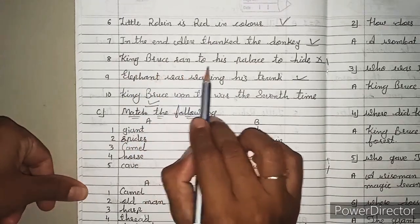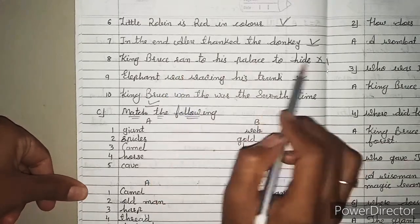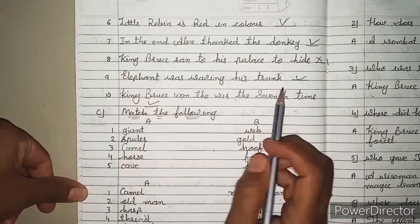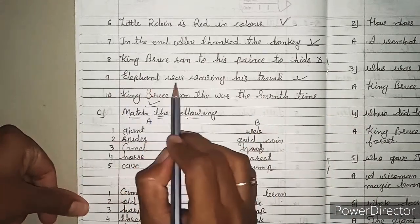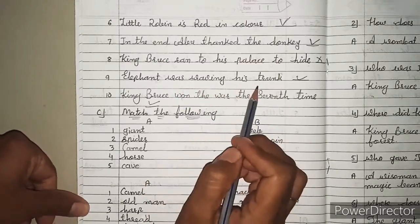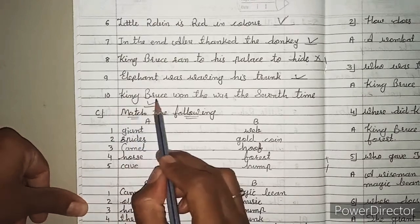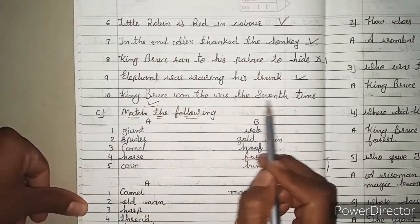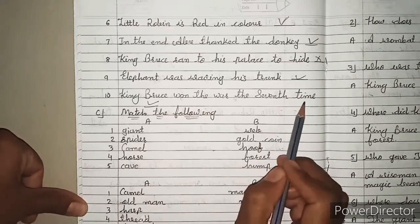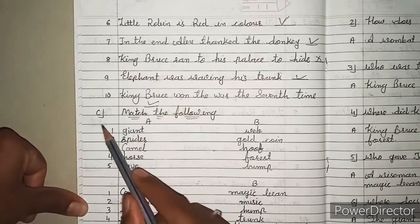8. King Bruce ran to his palace to hide. King Bruce दौड़ कर अपने palace में छिप गया था? तो Wrong आएगा. 9. Elephant was waving his trunk. Elephant अपनी trunk हिला रहा था? 10. King Bruce won the war the seventh time. King Bruce सातवीं बार अपनी war जीत गया था? तो क्या आएगा? Right.